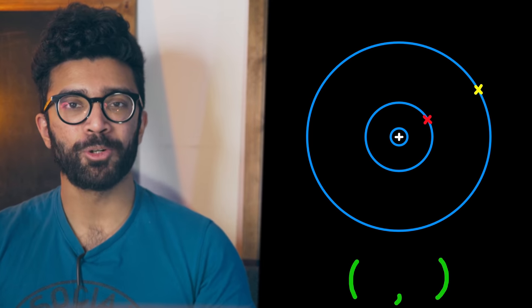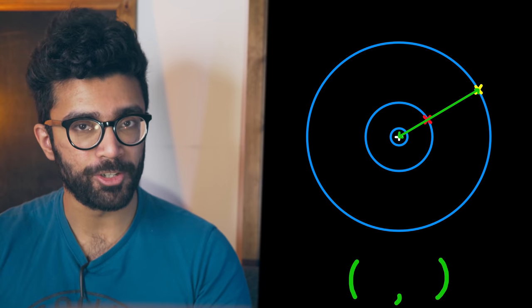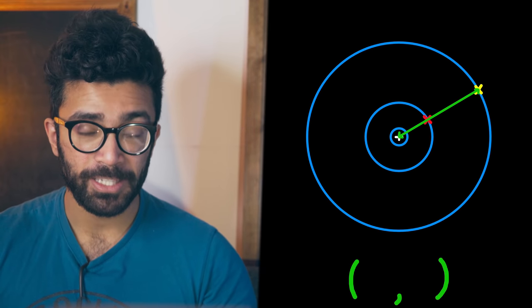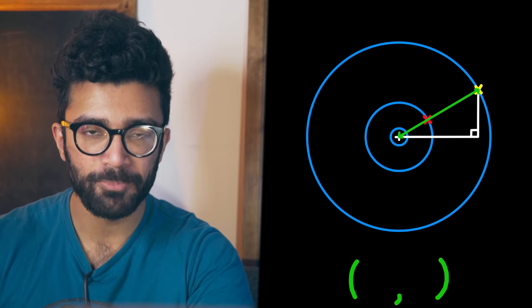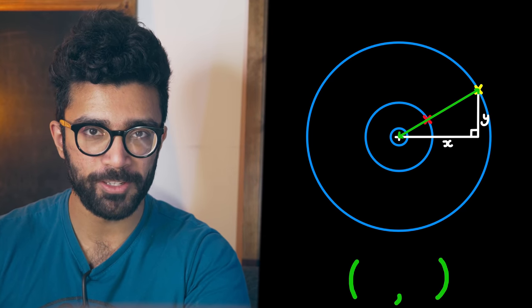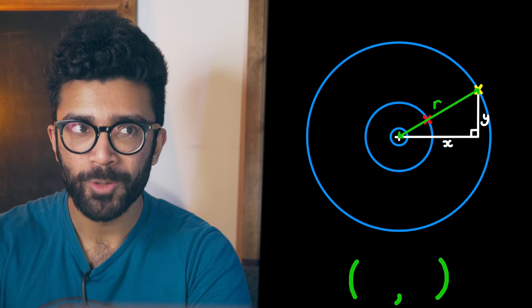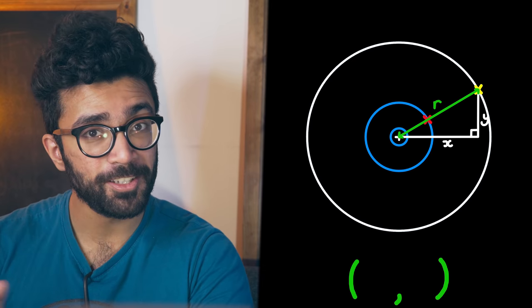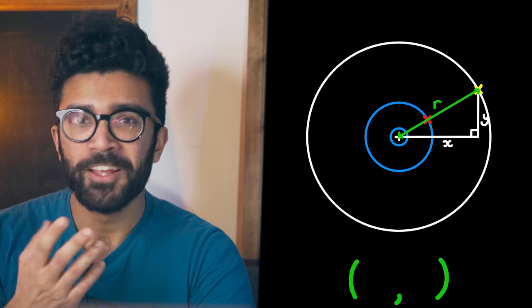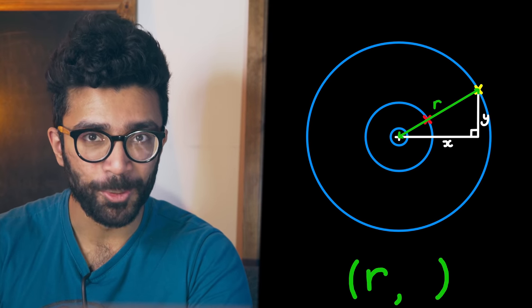To do this, let's recall that the distance between the origin and any of these points can be found using Pythagoras' theorem, and the x and y coordinates of each point. Let's call the distance between the origin and a certain point r—almost like it's the radius of a circle. This r is going to be one of our new coordinates.